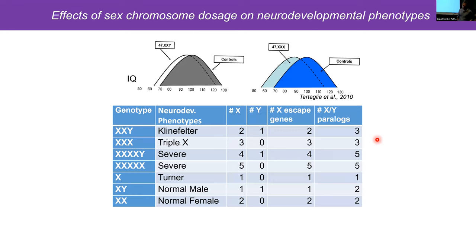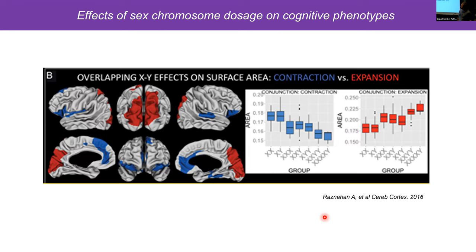There's strong evidence suggesting this is the case, especially for cognitive phenotypes. Klinefelter and XXX individuals often have lower IQs than controls. Klinefelter individuals with two copies of escape genes and three copies of XY paralogs sometimes aren't even diagnosed until puberty or when they try to have children. This contrasts with severe Klinefelter syndrome (four X's and a Y), which leads to five copies of these paralogs and four copies of escape genes. A study from Armin Rasnahan's lab showed a general trend of more severe brain structure contraction and expansion with additional sex chromosomes.